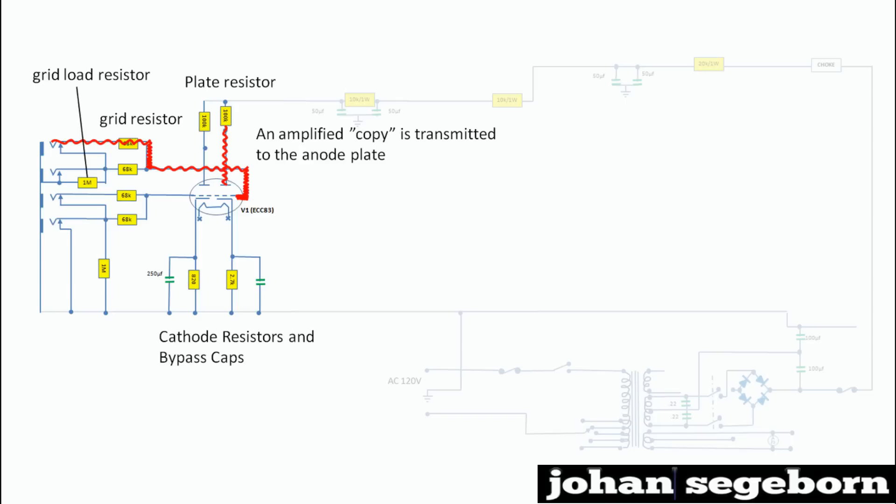And also biasing. As you can see on the cathode, you also have a bypass cap. And those are basically used to roll off bass. You probably won't find any of those in the super bass version.